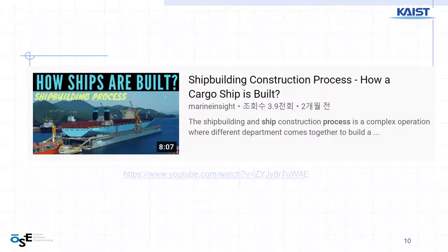Ship construction trips are usually similar — about 30 months nowadays. They are trying to reduce this time more and more, which is a way of increasing productivity. This is very similar to reducing the time for constructing a house or apartment building — the construction company wants to finish the whole process, reduce the time, and lower the cost.